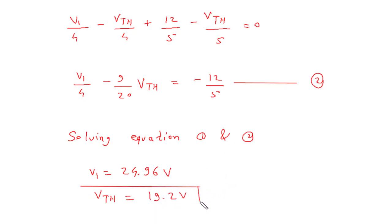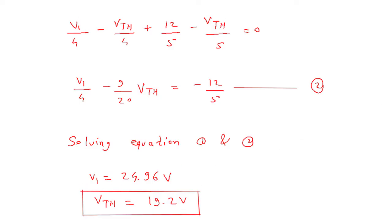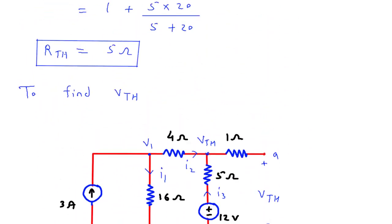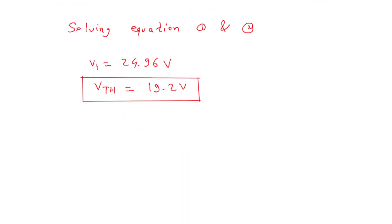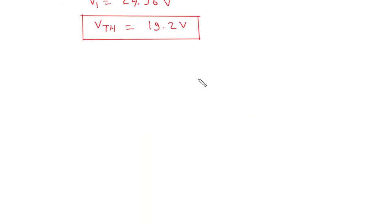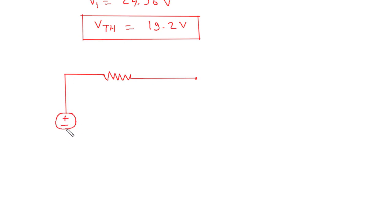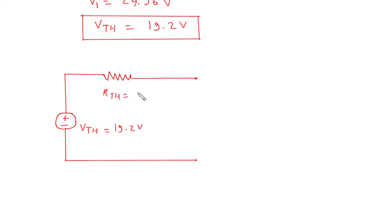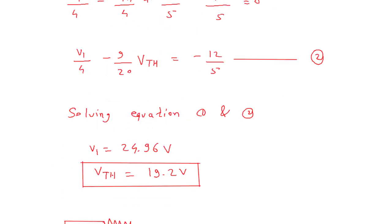V1 is equal to 24.96 V and VTH is equal to 19.2 V. So the value of VTH is 19.2 V and RTH is 5 ohm. From this we can draw the Thevenin equivalent circuit, which will be a resistor and voltage source in series. VTH equals 19.2 V and RTH equals 5 ohm.